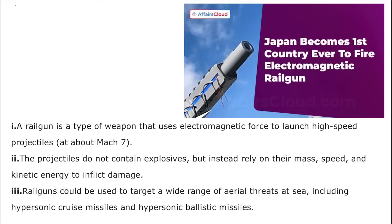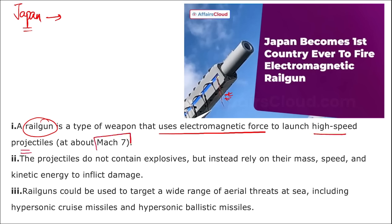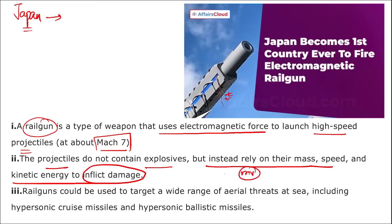Japan became the first country in the world to fire an electromagnetic rail gun. The Japanese Maritime Self-Defense Force, along with ATLA (Acquisition Technology and Logistics Agency), fired a medium-calibre maritime electromagnetic rail gun from an offshore platform. A rail gun uses electromagnetic force to launch high-speed projectiles at about Mach 7 — seven times the speed of sound. These projectiles do not contain explosives; they rely on mass, speed, and kinetic energy (momentum: P = mv) to inflict damage.